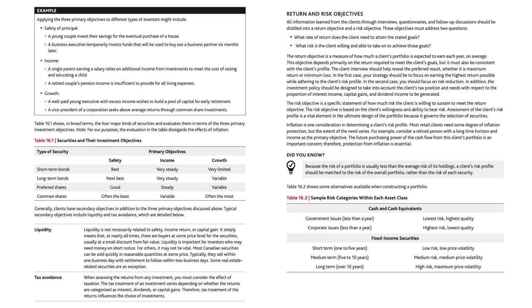Clients have secondary objectives in addition to the three primary objectives. Typical secondary objectives include liquidity and tax avoidance. Liquidity simply means that at nearly all times there are buyers at some price level for the securities, usually at a small discount from fair value. Liquidity is important for investors who may need money on short notice. Most Canadian securities can be sold quickly in reasonable quantities, typically within one business day with settlement within two business days. Some real estate related securities are an exception.